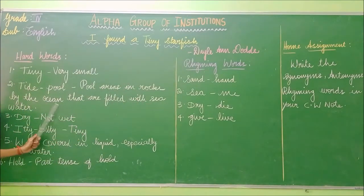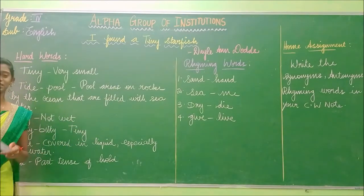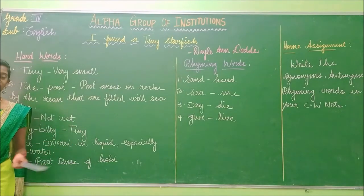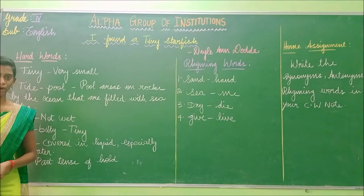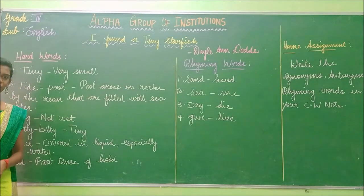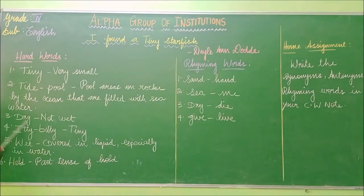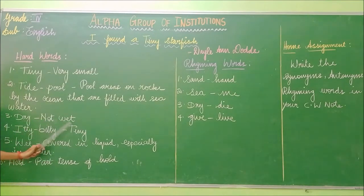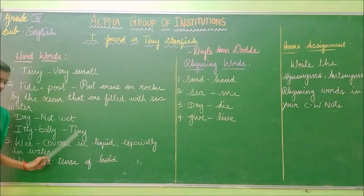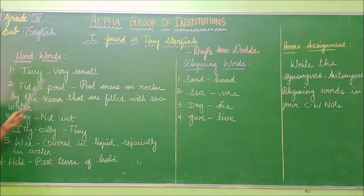So tide pool is nothing but an area that is filled by the sea water in the ocean. Dry — not wet. Itty bitty — the meaning of itty bitty is tiny. So you have already known what is meant by tiny; tiny means very small. So itty bitty means very small.